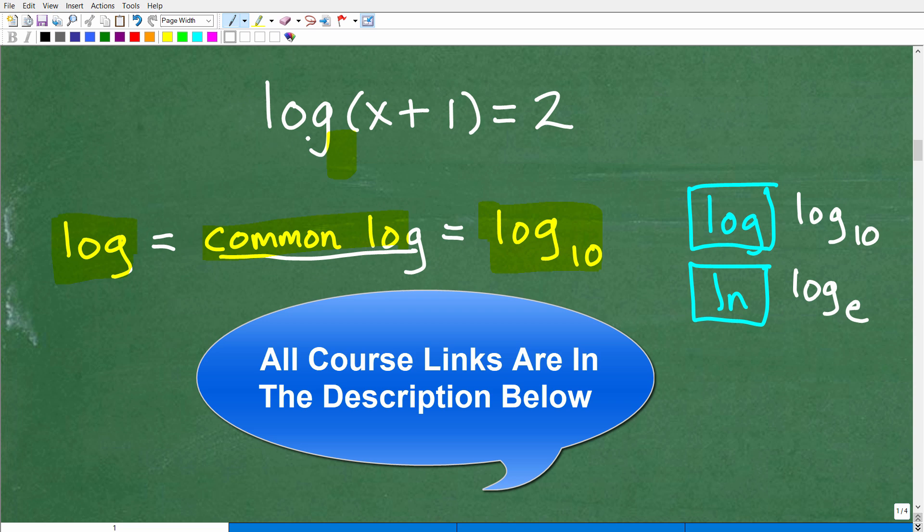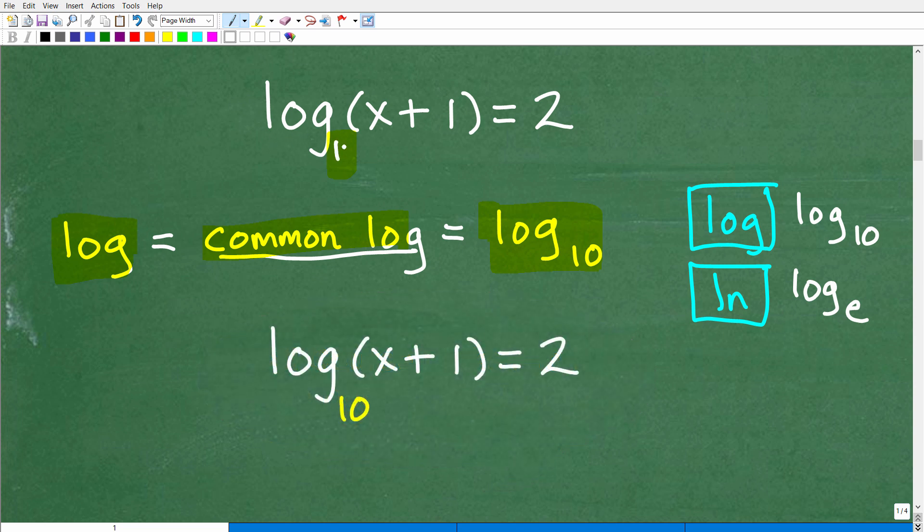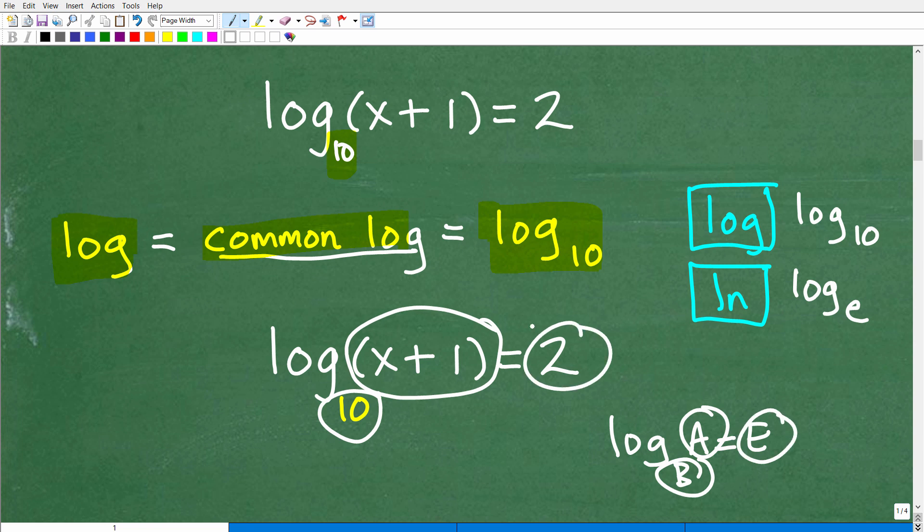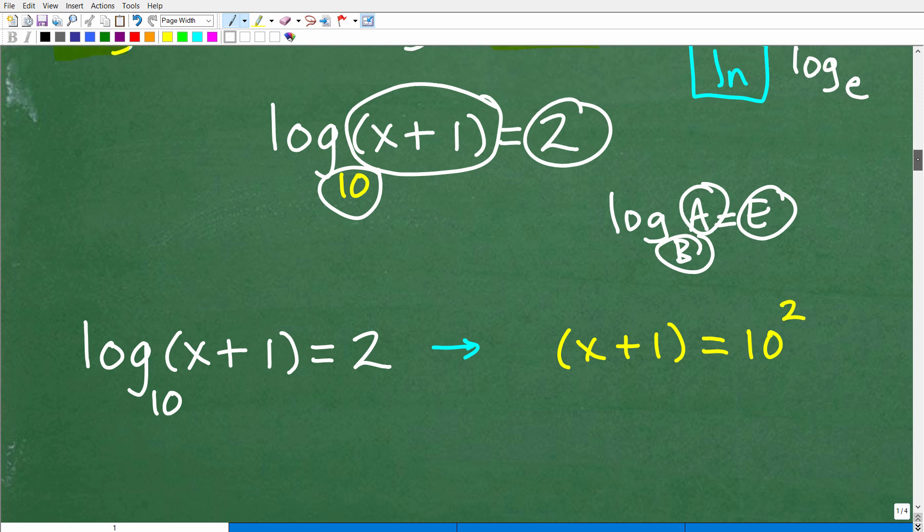So right here, we don't write the 10, but there is a 10. So now we have log base 10 and x plus 1 is equal to 2. So now we're thinking, okay, bacon and eggs, B-A-E. This is the base. This is the answer. And this right here, this 2, is the exponent.